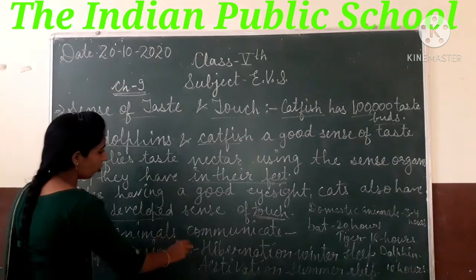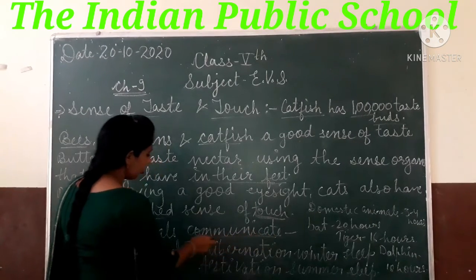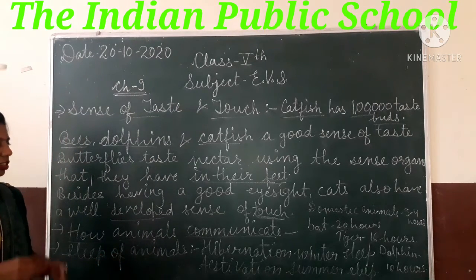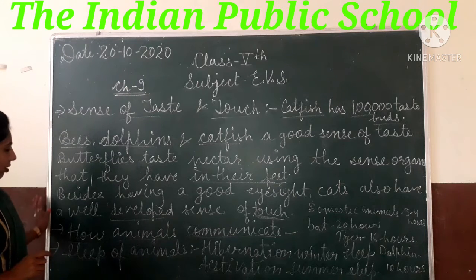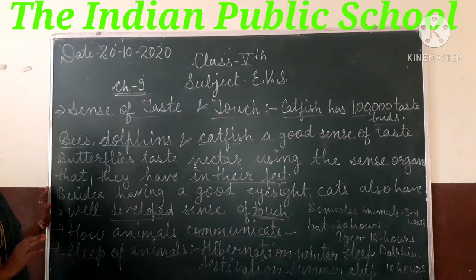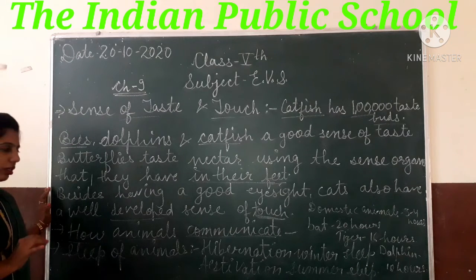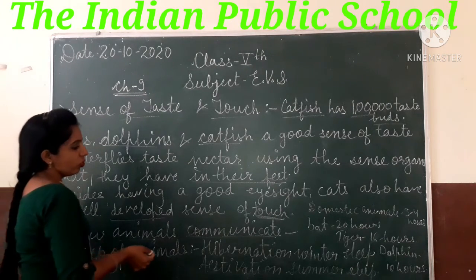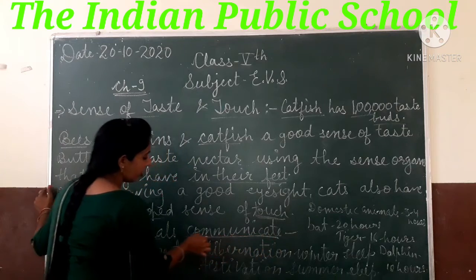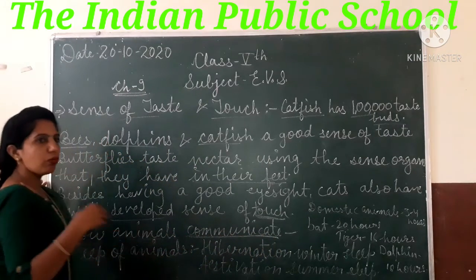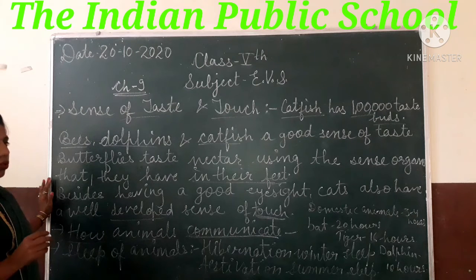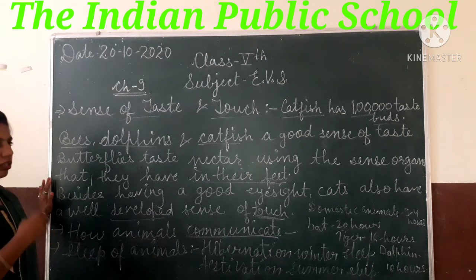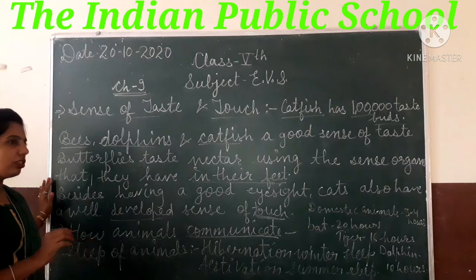Animals किस प्रकार से communicate करते हैं — animals के अंदर एक special power होती है communicate करने के लिए। उनके पास कुछ types की language होती है, जैसे कि parrot को जैसा हम बोलेंगे वो वैसा ही हमारे पीछे speak करता है। इस प्रकार से उनकी communication होती है।